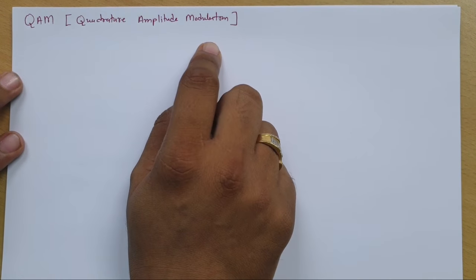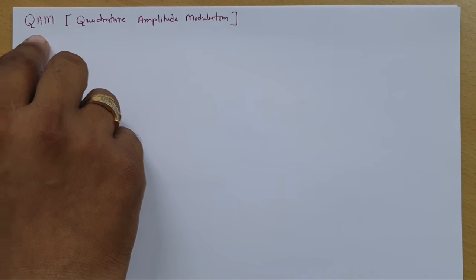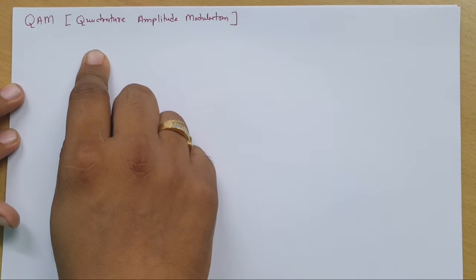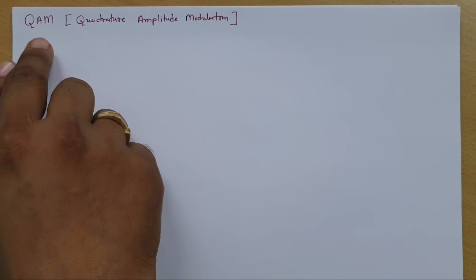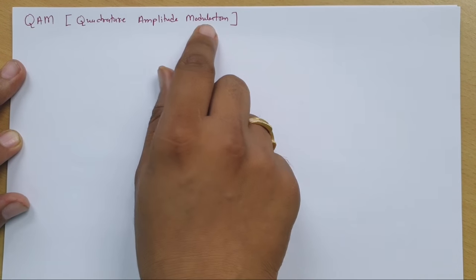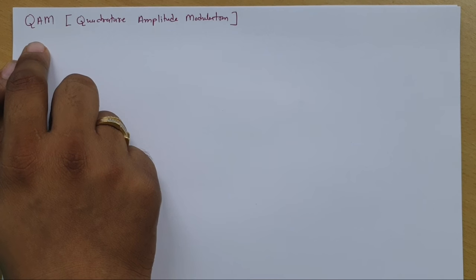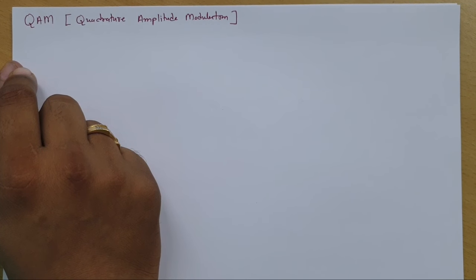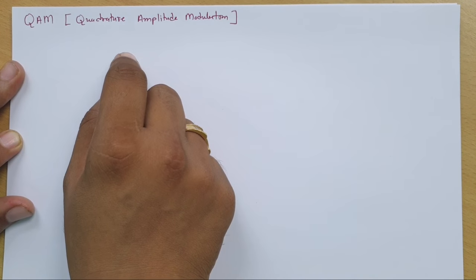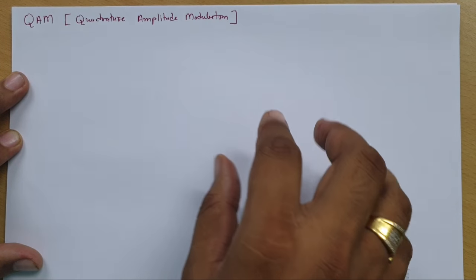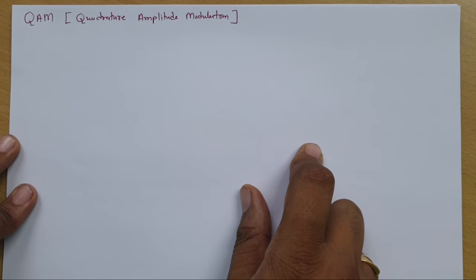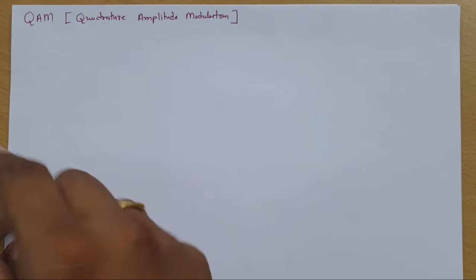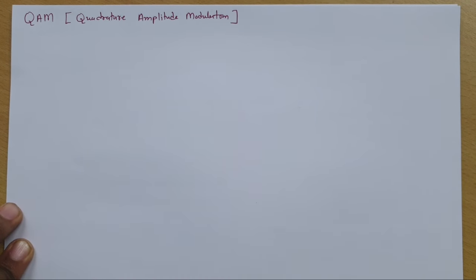Let us begin this session with QAM. QAM is Quadrature Amplitude Modulation, and it is utilized in both digital and analog modulation. In digital modulation, it is a combination of PSK and ASK. In analog modulation, it is a combination of phase modulation and amplitude modulation. I'll explain the transmitter first, then the resultant signal, then the QAM receiver, and finally the constellation diagram.